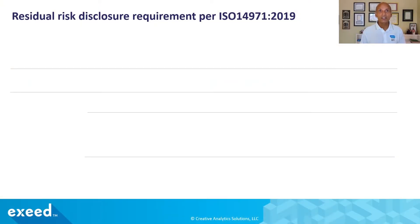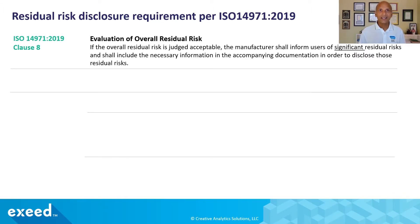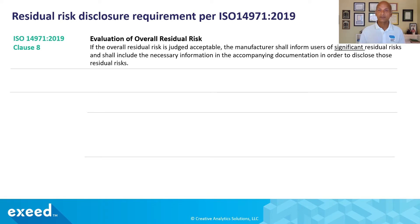As far as the residual risk disclosure requirements for ISO 14971 are concerned, in Clause 8 there is a requirement for evaluation of overall residual risk — the aggregate sum total of all residual risks. The manufacturer shall inform users of significant residual risks and shall include the necessary information in the accompanying documentation. You might ask: what is 'significant'? The standard doesn't tell you explicitly, but they leave you some clues. Significant is how you define them as significant.